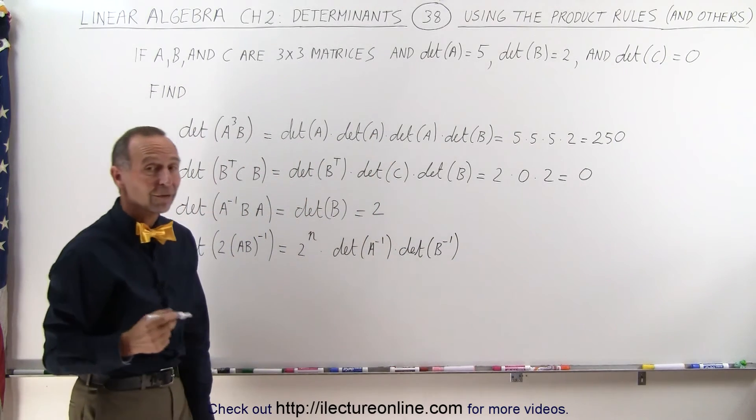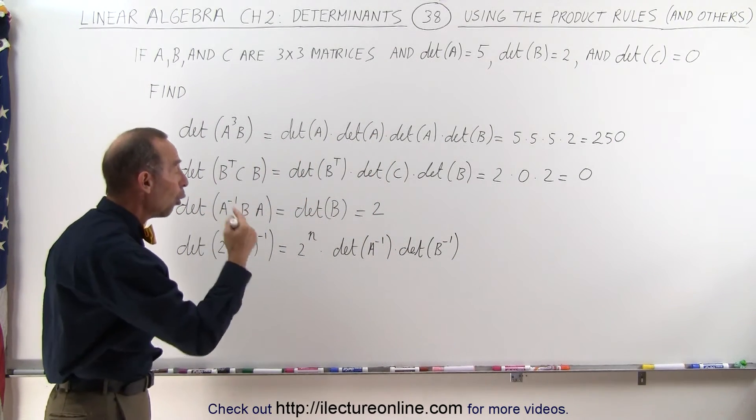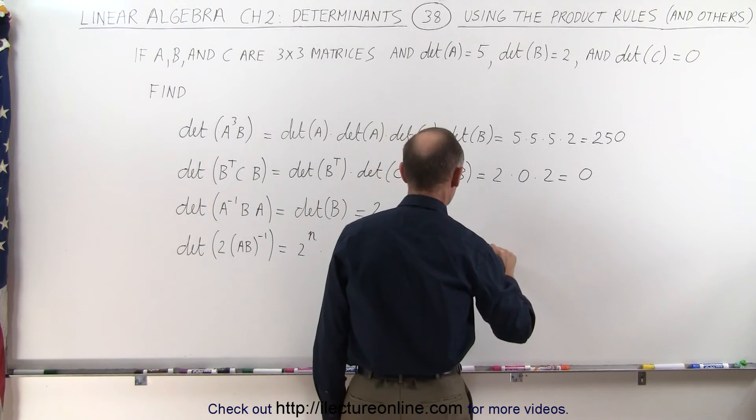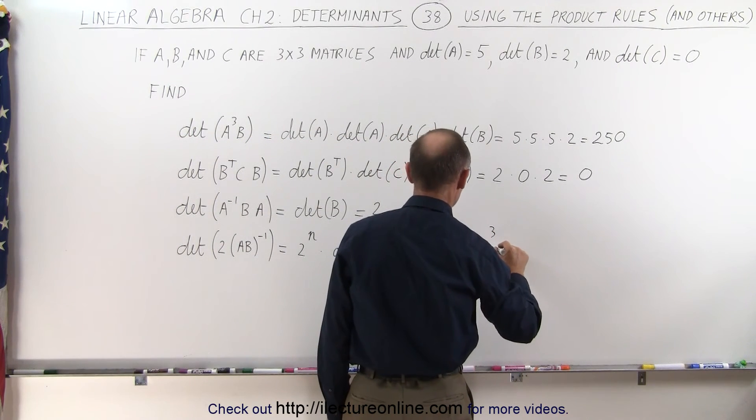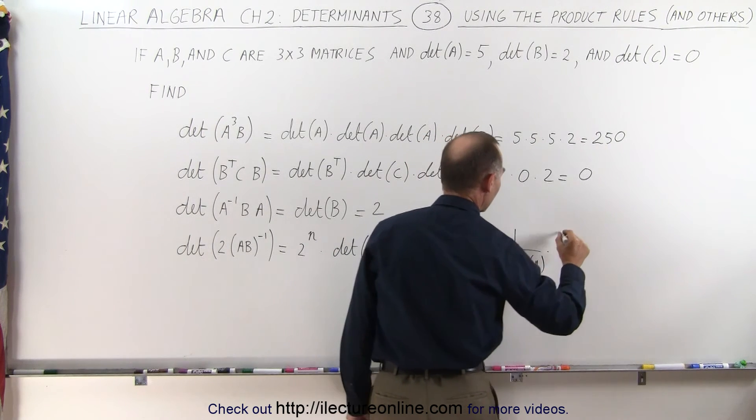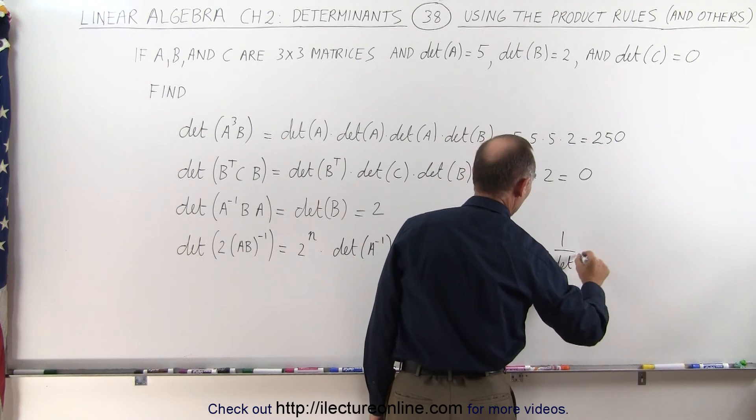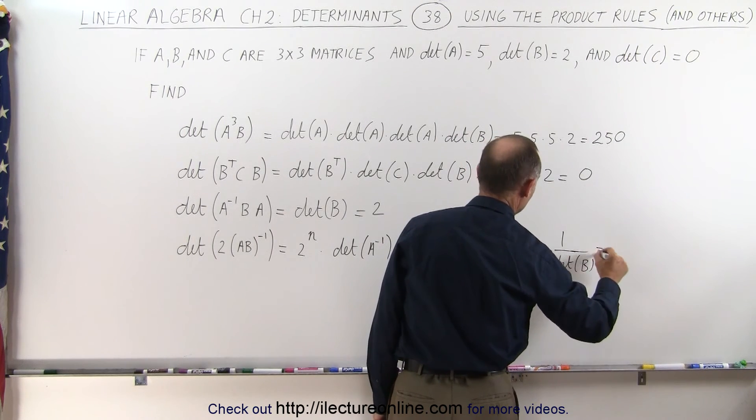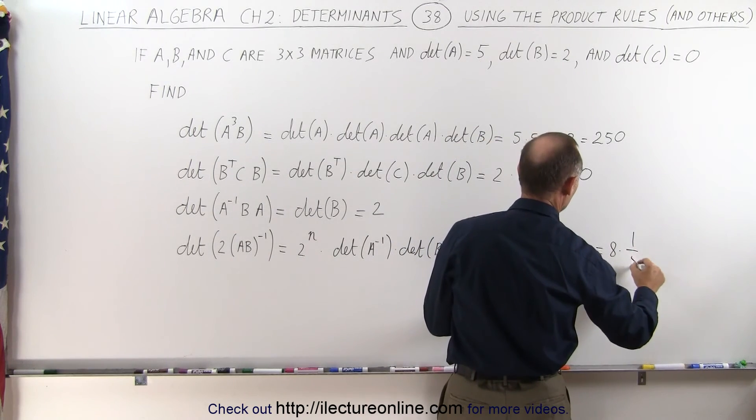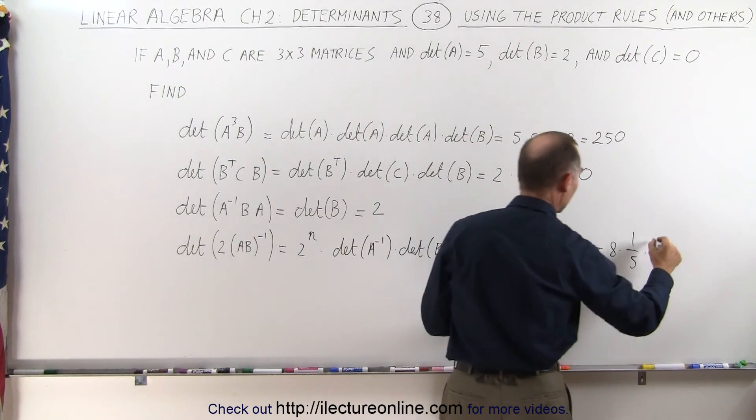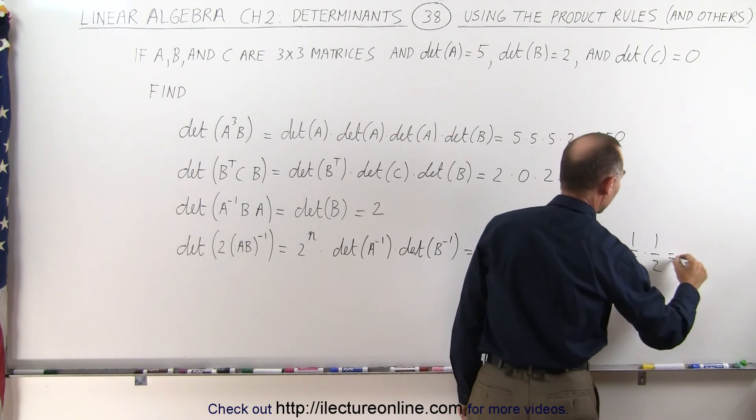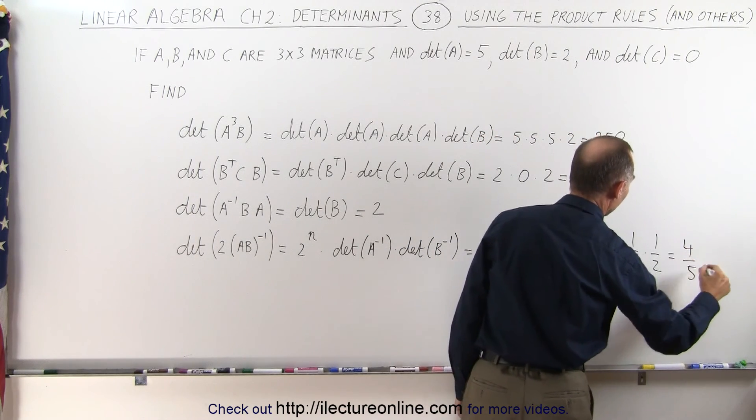And of course, the determinant of the inverse of the matrix is equal to 1 over the determinant of that matrix. So this can be written as 2 to the 3rd power times 1 over the determinant of A times 1 over the determinant of B. And then this can be written as 8 times 1 over 5 times 1 over 2. And 8 divided by 2 is 4, so this becomes 4 over 5.